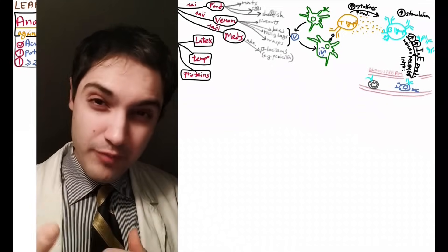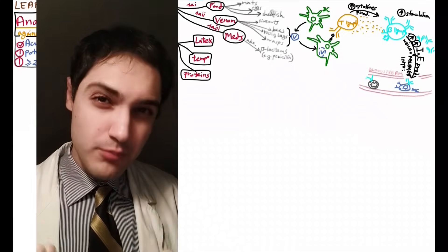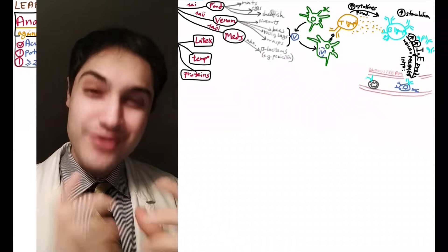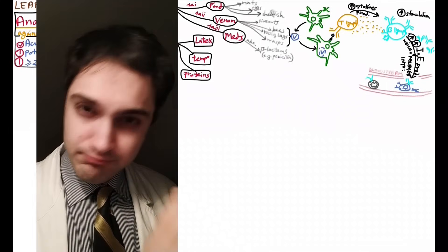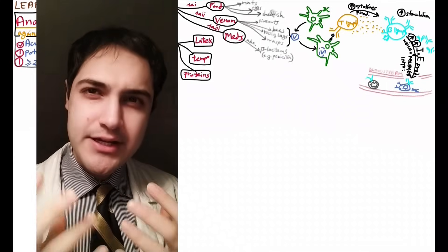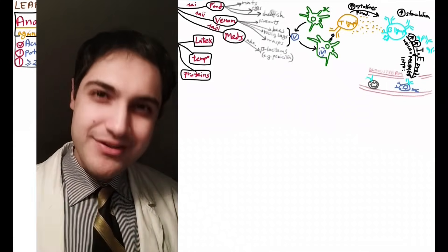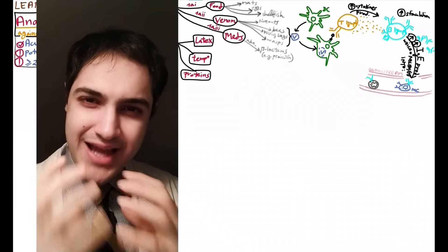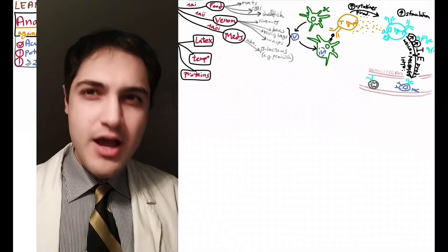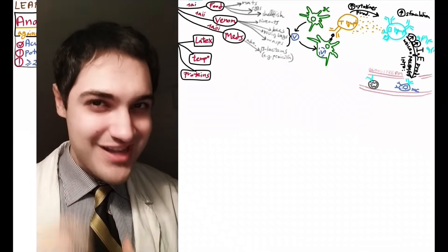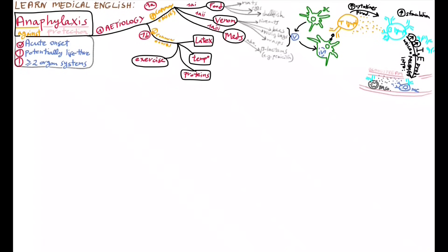A couple of weeks or months later, Yuri is stung by a wasp again. During the second exposure, the mast cells and the basophils, which already have IgE antibodies on their surface, bind to the antigens and degranulate, thus releasing their pro-inflammatory molecules.